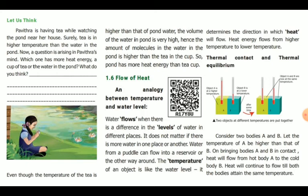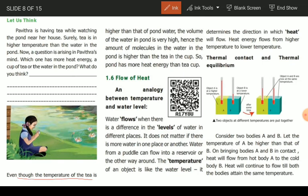The temperature of tea is comparatively higher. But the heat energy of the pond is not less — even though the temperature of the tea is higher. The temperature of the tea is higher, but the volume of the pond water is higher. So the amount of water in the tea is less, and the molecules of the tea are fewer. So the pond has more heat energy.